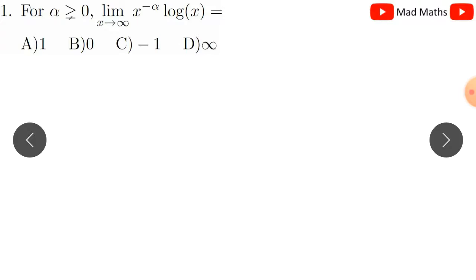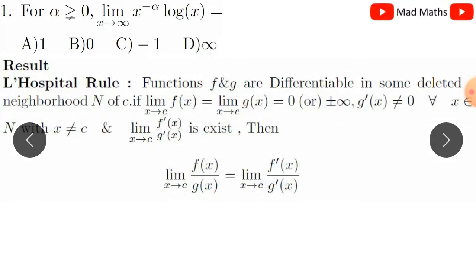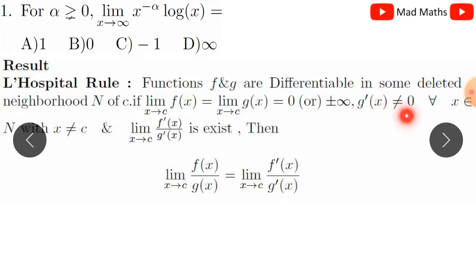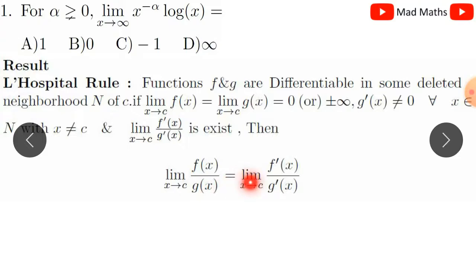The approach uses L'Hôpital's rule. The result states: if functions f and g are differentiable in some deleted neighborhood n of c, and if the limit as x tends to c of f(x) equals the limit of g(x) equals zero or plus or minus infinity, and g'(x) is not equal to zero for every x in the neighborhood with x not equal to c, and the limit of f'(x) divided by g'(x) exists, then the limit of f(x) divided by g(x) equals the limit of f'(x) divided by g'(x).